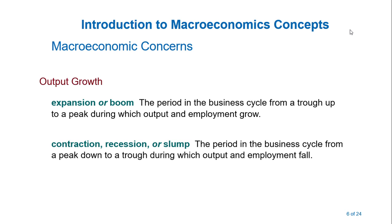Expansion is a period in the business cycle from a trough — that is, from a low point when things are not going well — where it gets to a minimum and then starts rising. So expansion is the period between the trough and the peak, during which output and employment grow.